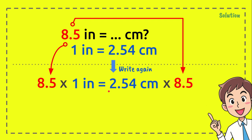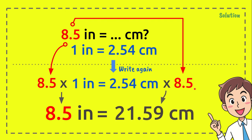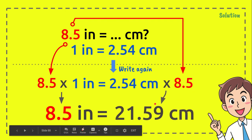Times 1 inch. Now, 8.5 times 1 inch equals 8.5 of course, 8.5 inches. And 2.54 centimeters times 8.5 equals 21.59 centimeters.